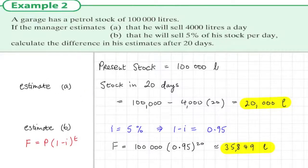And so these are how they compare. And what's the difference between the two answers? Well, that would be 35,849 minus 20,000. The difference here we see is 15,849 litres.